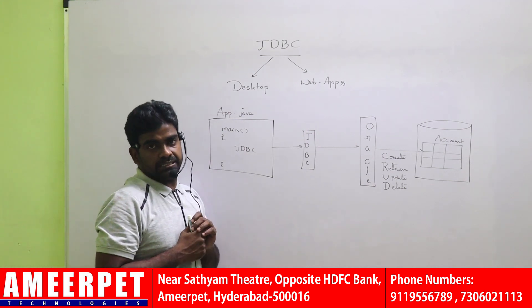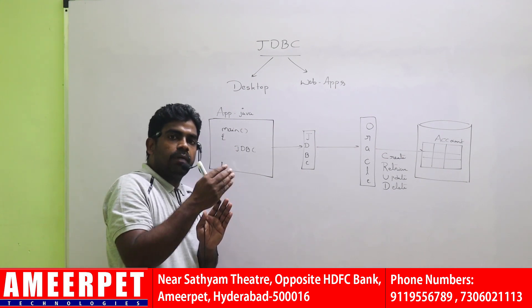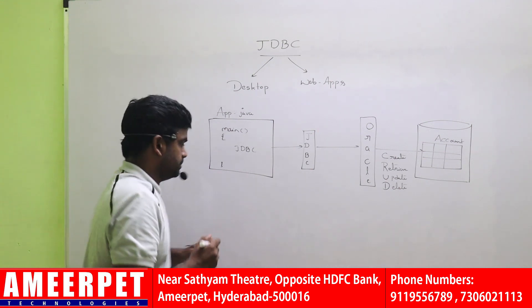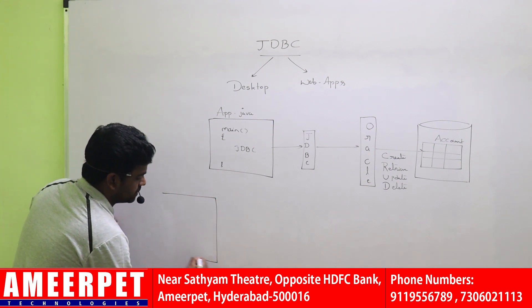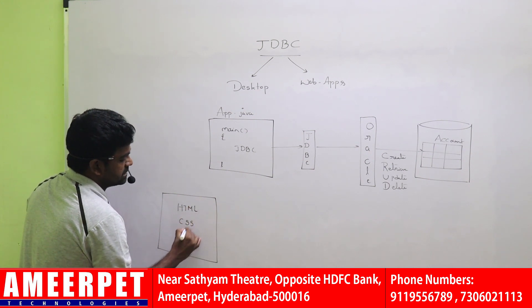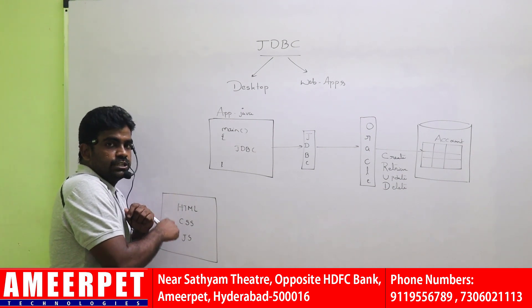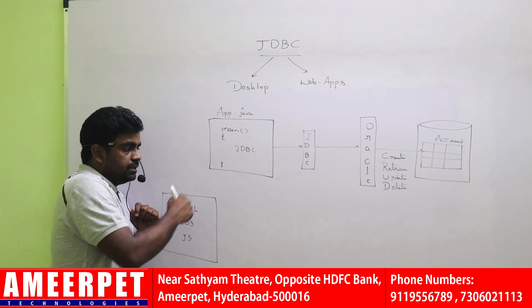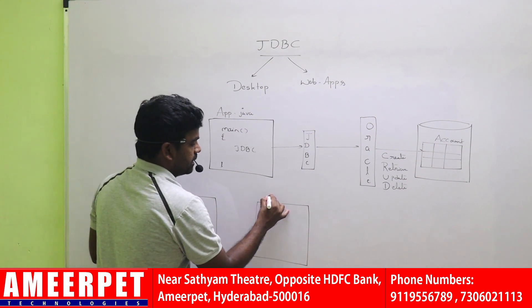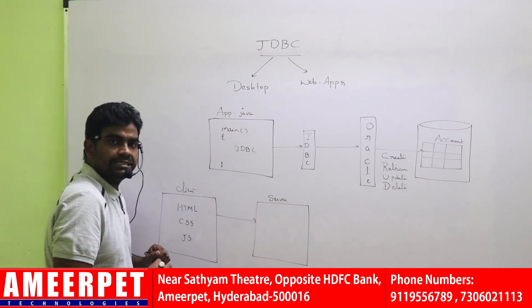For example, if it is a web application — web application means client system, server system and database, all three are present. If it is a web application, here we are designing the client. We know that the client is designed with HTML, CSS and JavaScript. We get the information from the HTML file, and whatever information you are sending to the server machine.